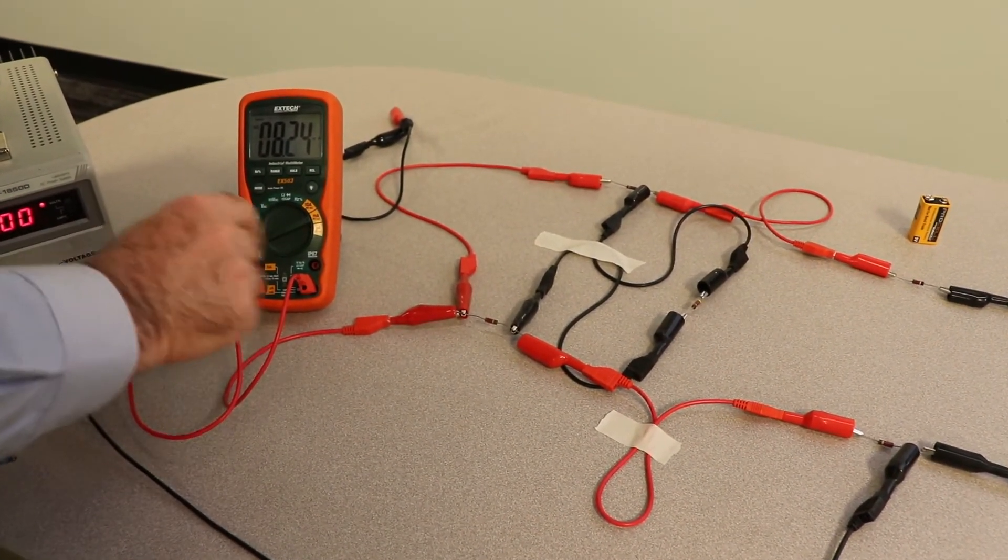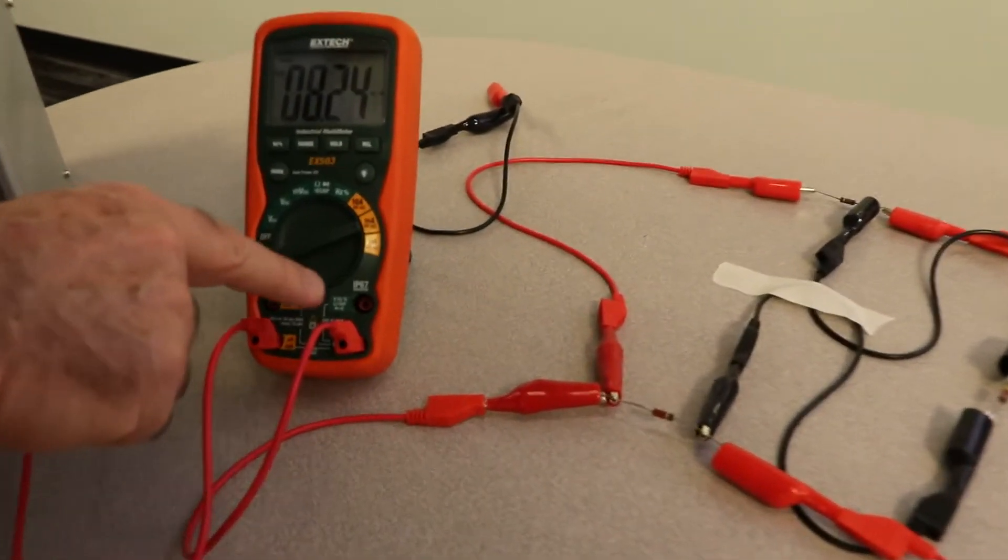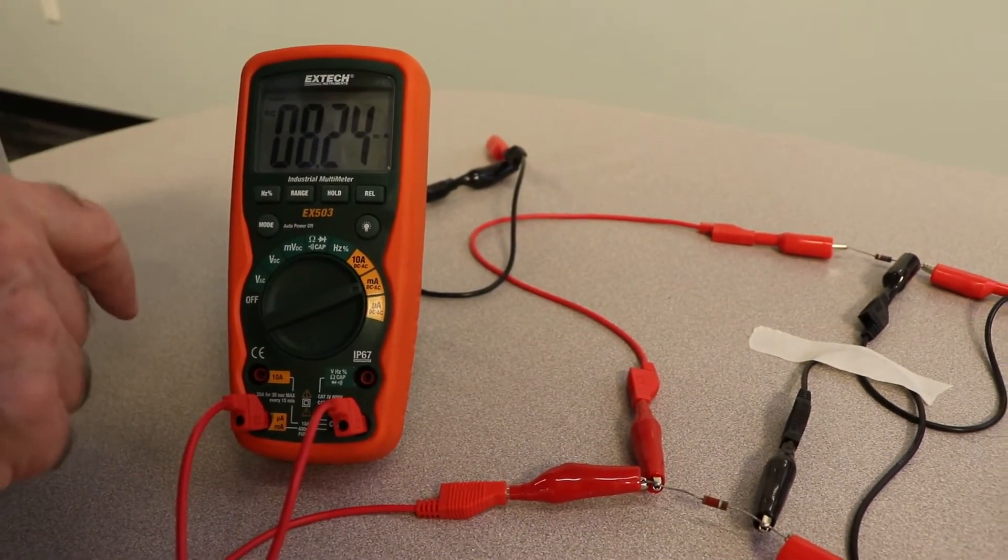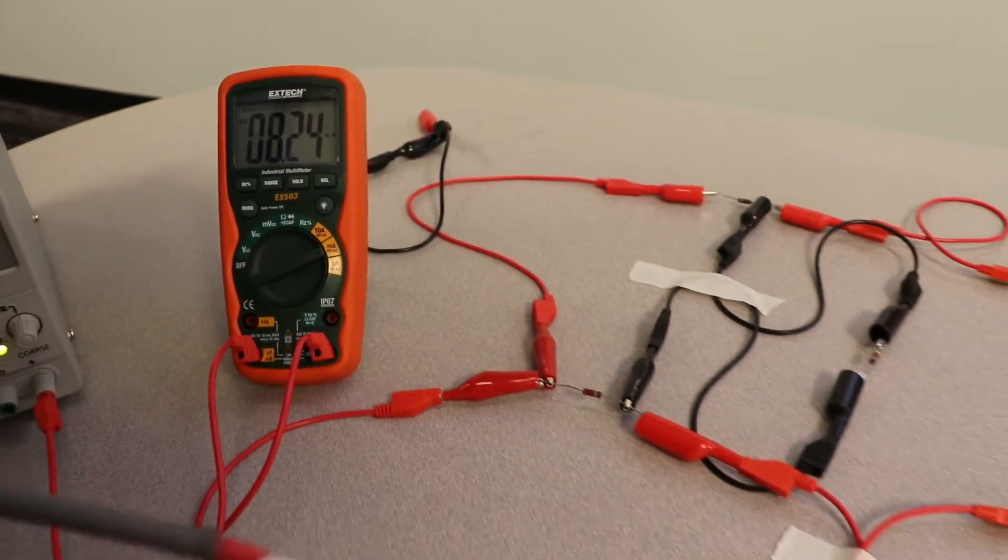We're going to actually set up an ammeter so you can see how it's done. So the current goes in here. This is common over here. This is the high side of the meter. So current comes in here, and then it comes out here. And it says there's 8.24 milliamps flowing in the circuit right now.